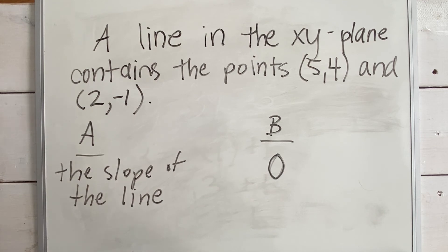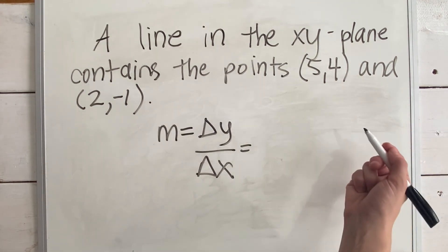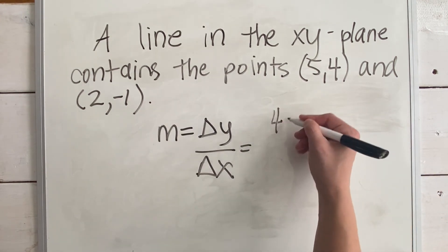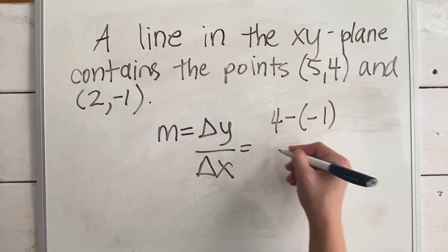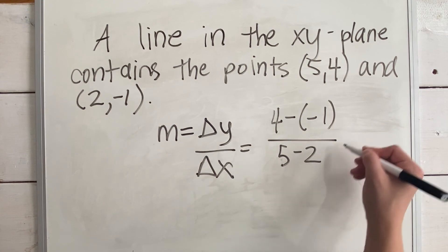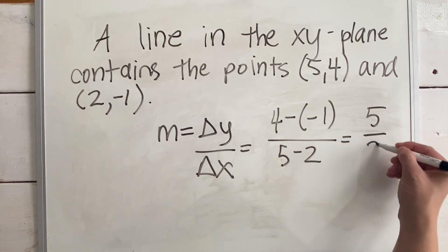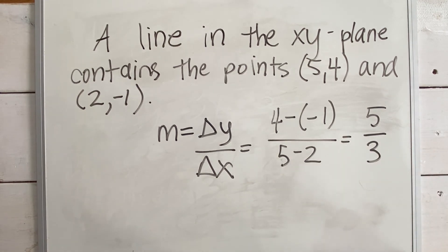To begin with, we can easily find the slope of the line because we have two points, and we can use our equation to find the change in y over the change in x. All right, so let's plug it in. We'll do the change in y on the top. I'm going to do four minus negative one over the change in x is five minus two. Four minus negative one is five over five minus two is three. So our slope is five thirds.